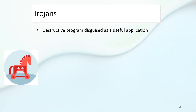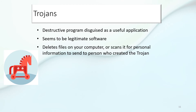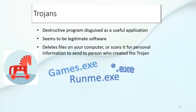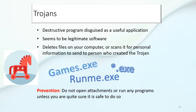Trojan: this is a destructive program, but it's disguised as something useful. It seems to be legitimate software, but when you run it, the disaster happens. It deletes files on your computer, or it scans your computer for personal information and sends it to the person who created the Trojan. Any .exe file — beware, it may contain a Trojan. Do not open attachments or run any programs unless you are quite sure it is safe to do so.